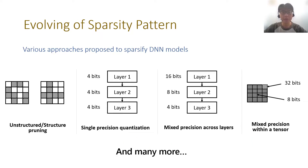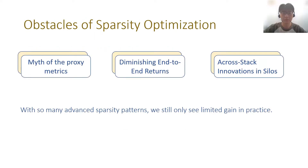Deep learning model sparsity is an actively studied research topic, and various algorithm research works propose many different methods to sparsify DNN models, including unstructured and structured pruning, single precision quantization, mixed precision quantization across different layers, and even mixed precision quantization within the tensor. However, with so many advanced sparsity patterns, why do we still see very limited gain in practice?